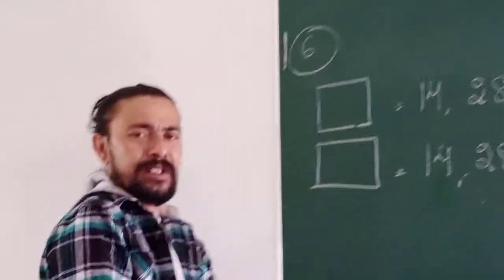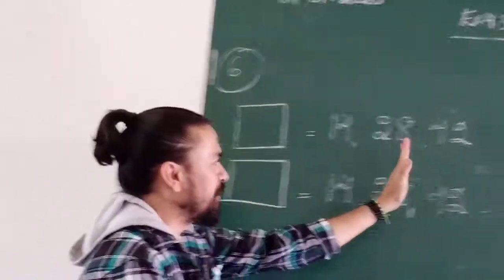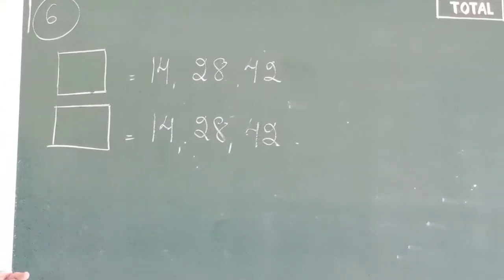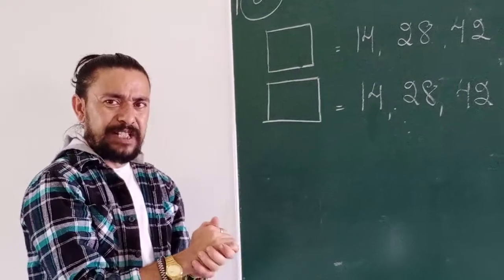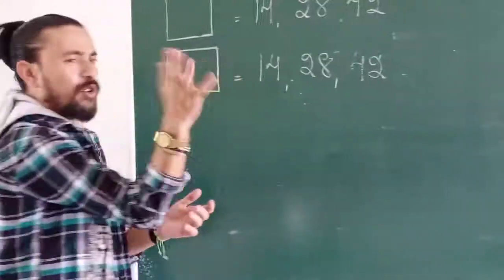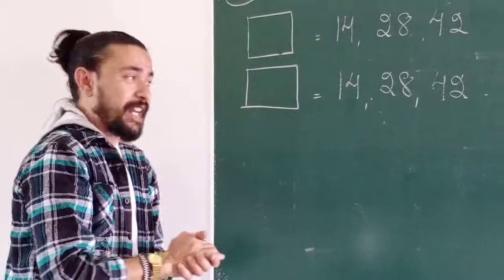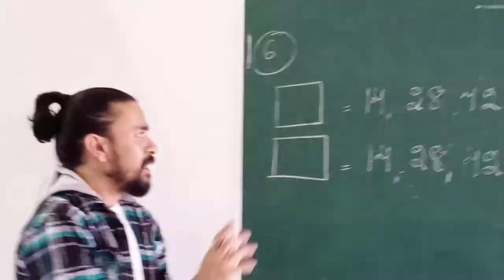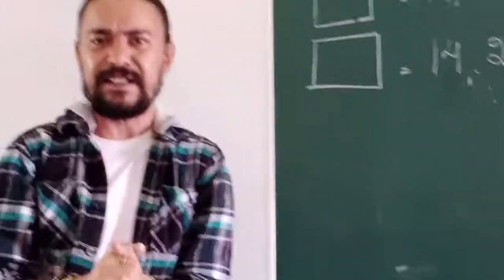7. Definitely 2 would have it because all are even numbers. 3 cannot have it because 1 and 4 is 5. 4 cannot have it because 14 does not come in 4 times table. 5 cannot have it because none of these numbers end with 5 and 0. 6 can have it because 6, 7, 42, but 28 and 14 does not come in 6 times table.